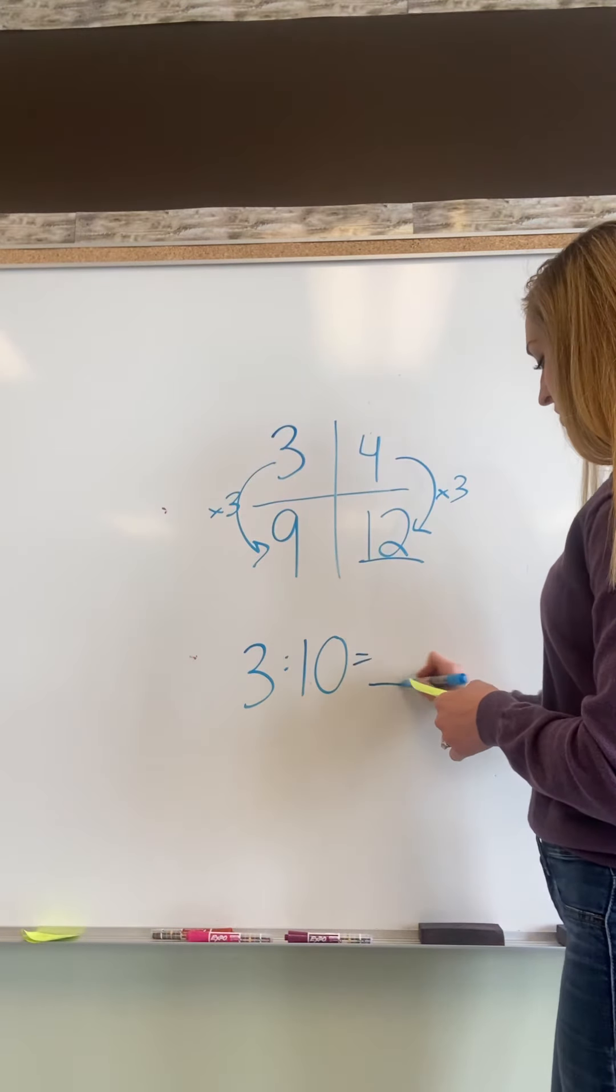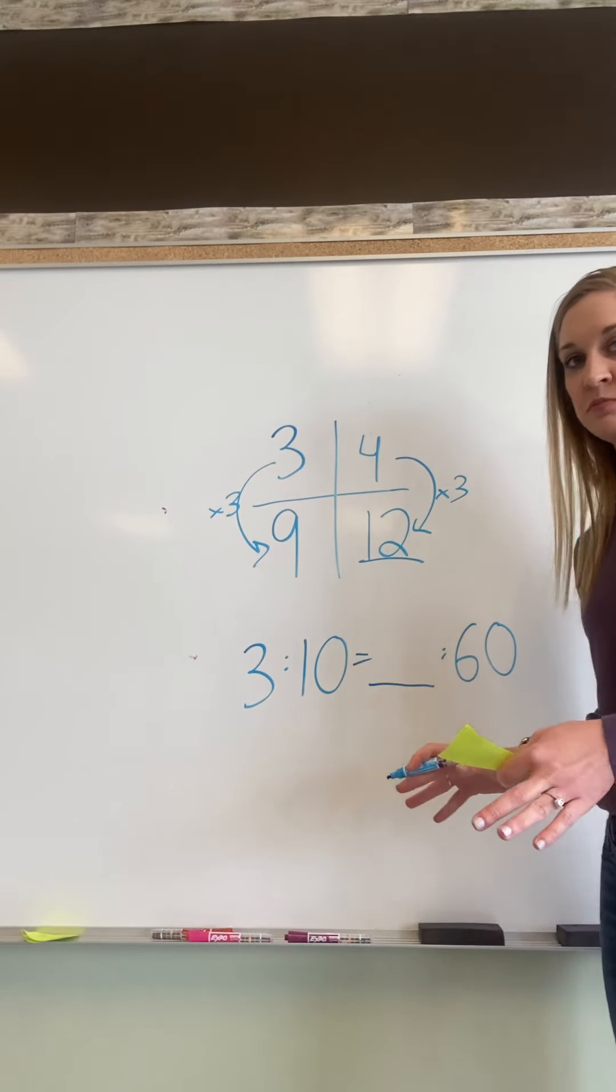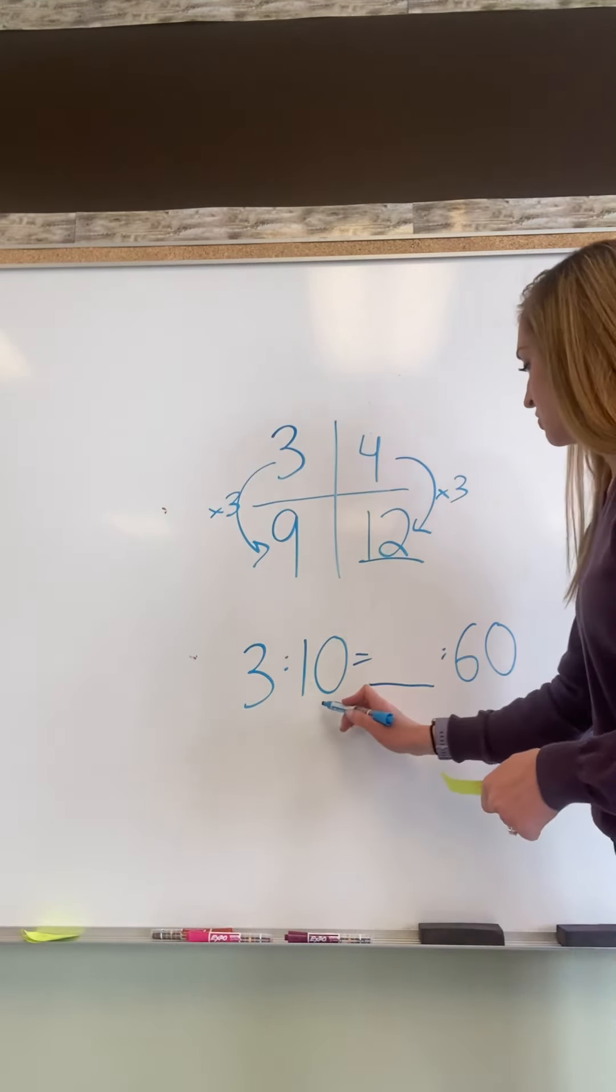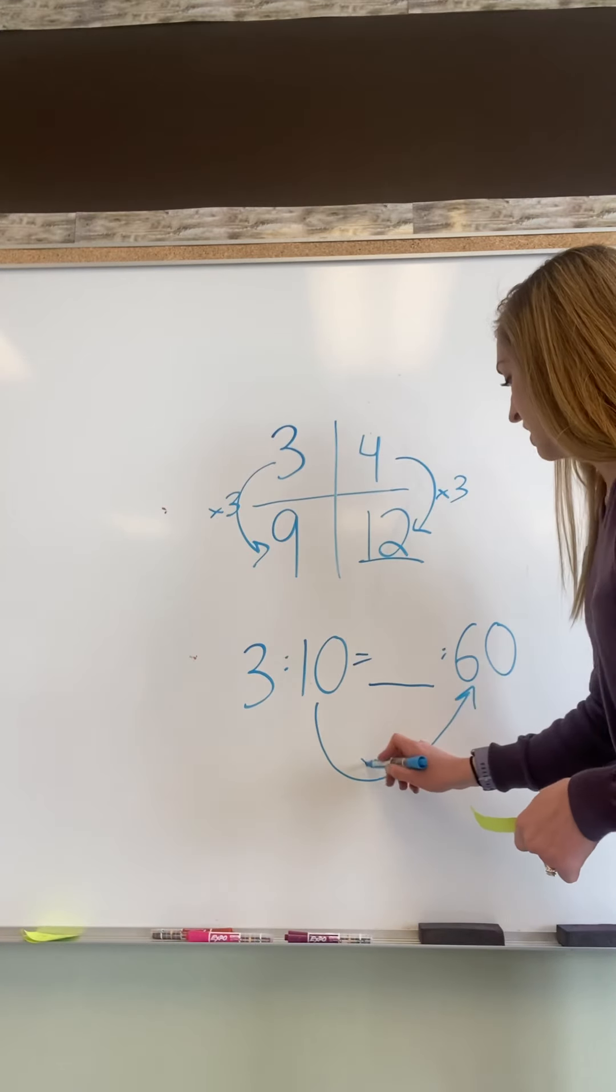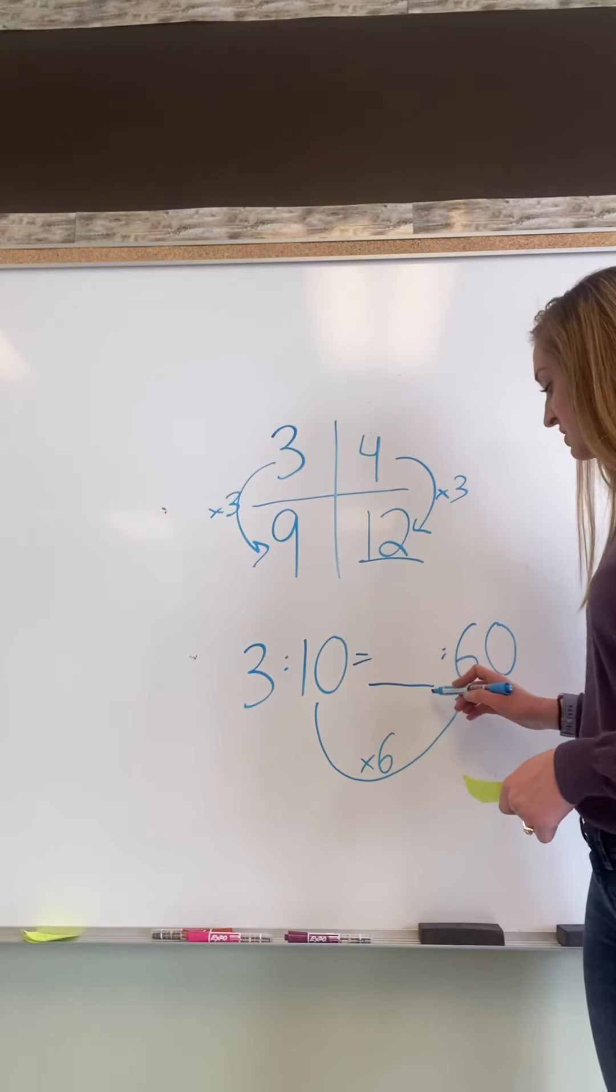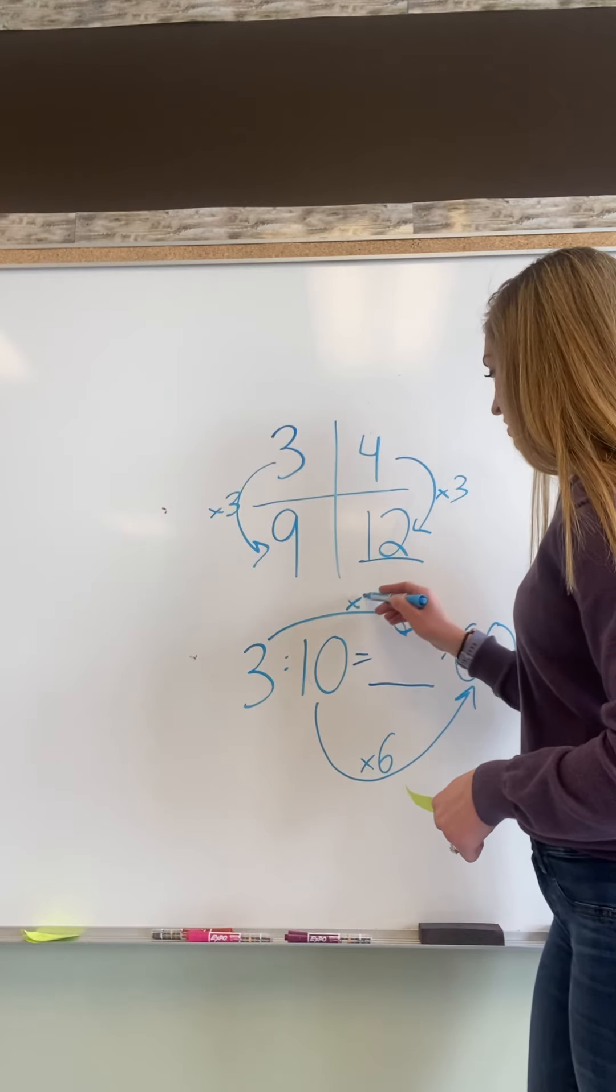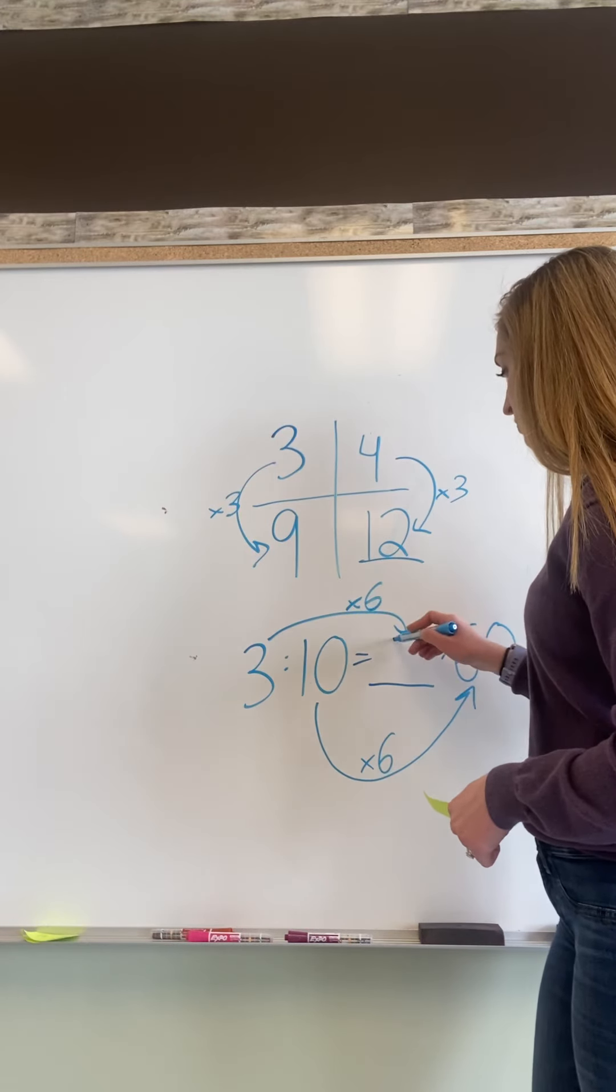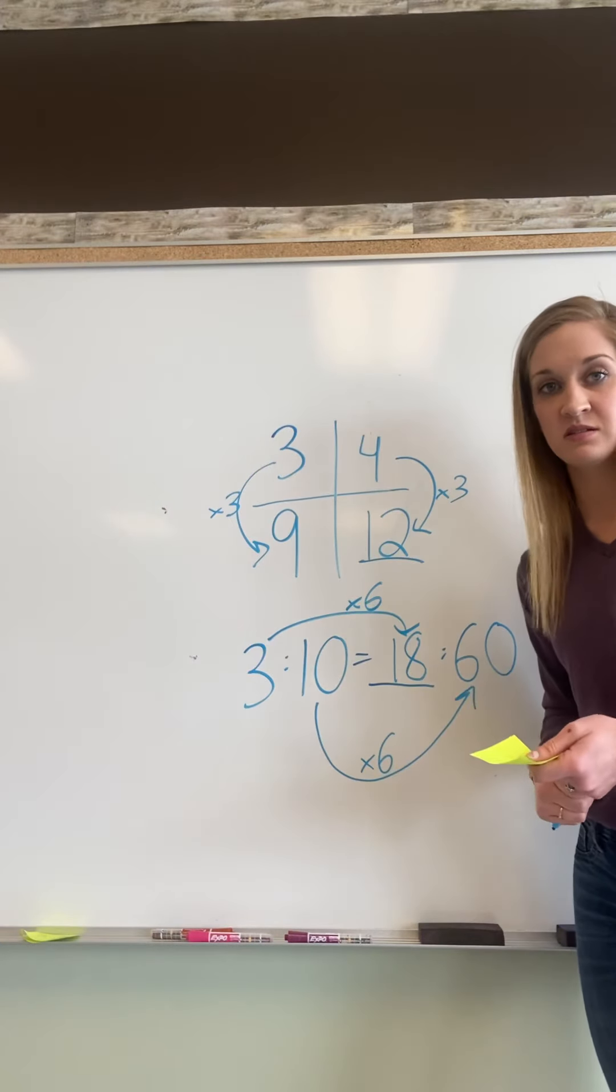So three to ten equals something to sixty. So same concept, just now we don't have a table. So to get from ten to sixty I have to multiply it by six. So that means to figure out whatever goes in this spot here, I have to multiply three by six, which is eighteen. So three to ten is equal to eighteen to sixty.